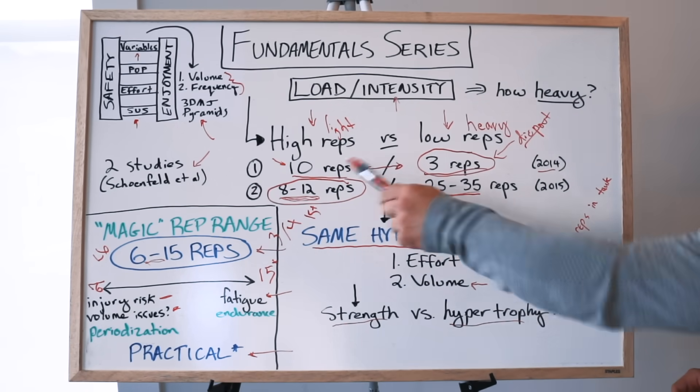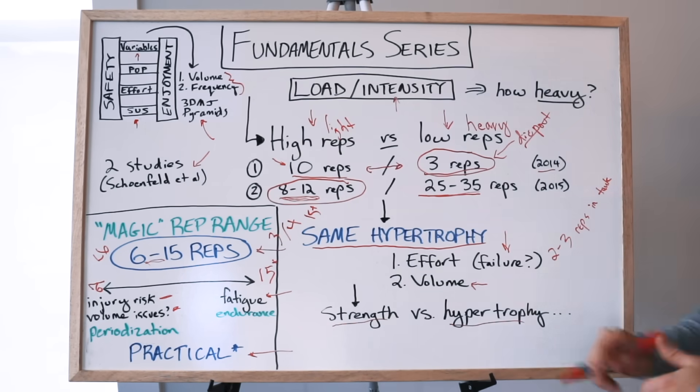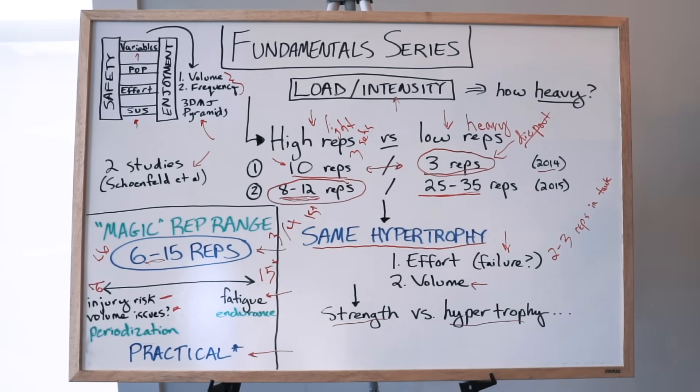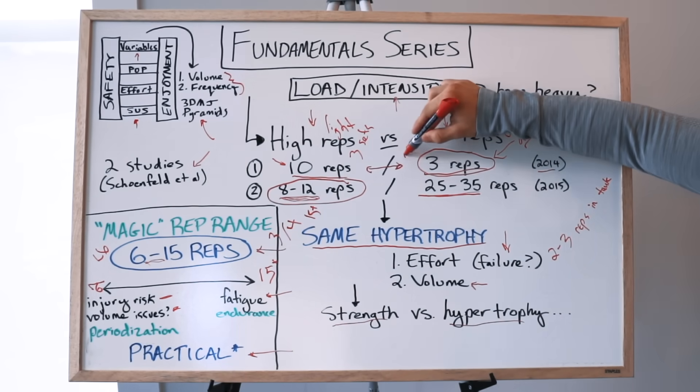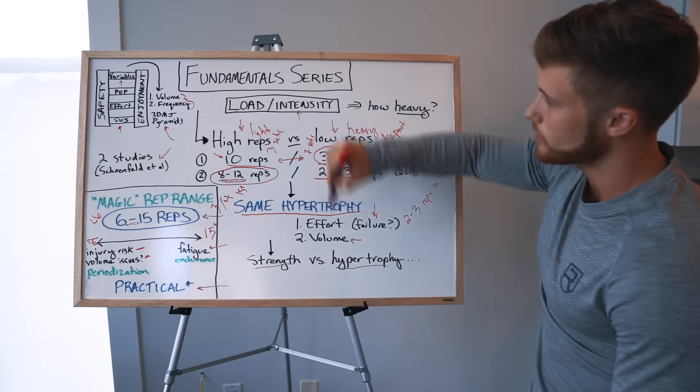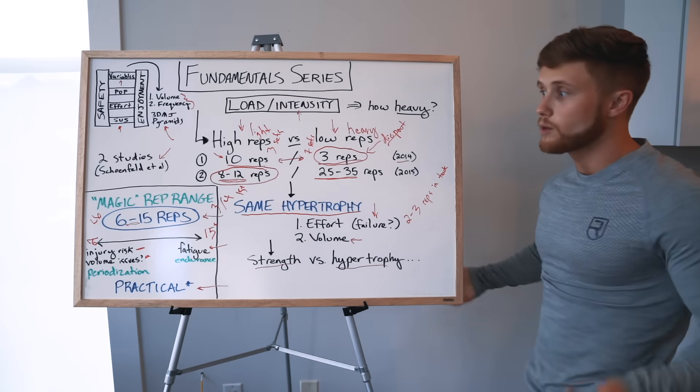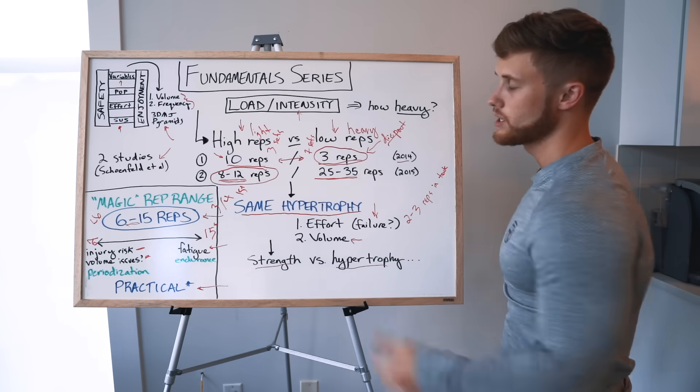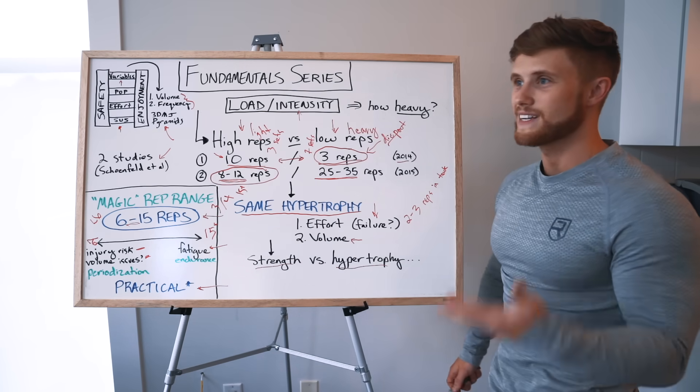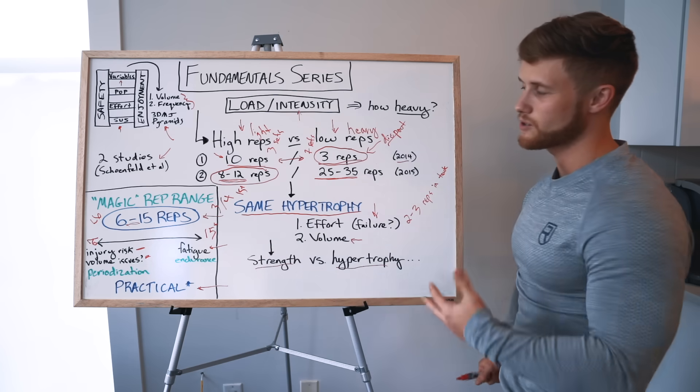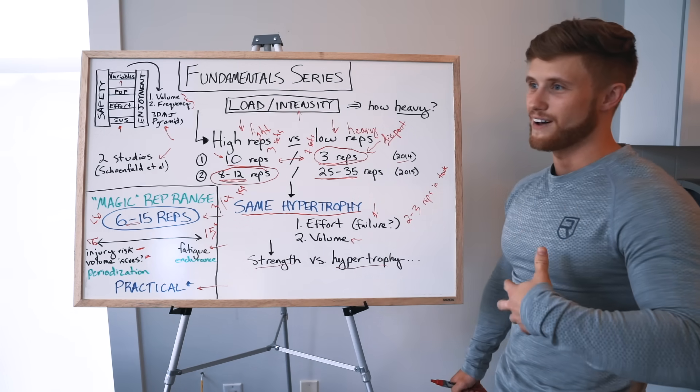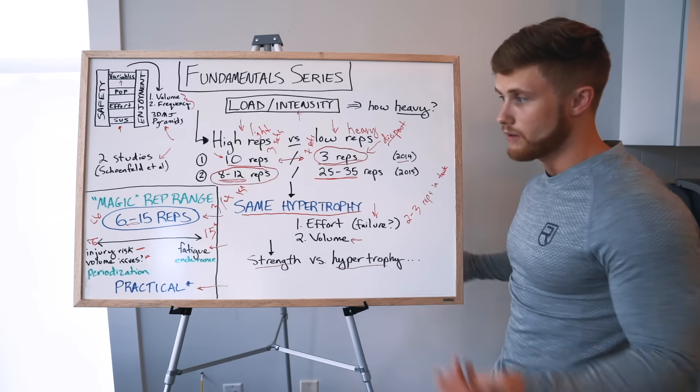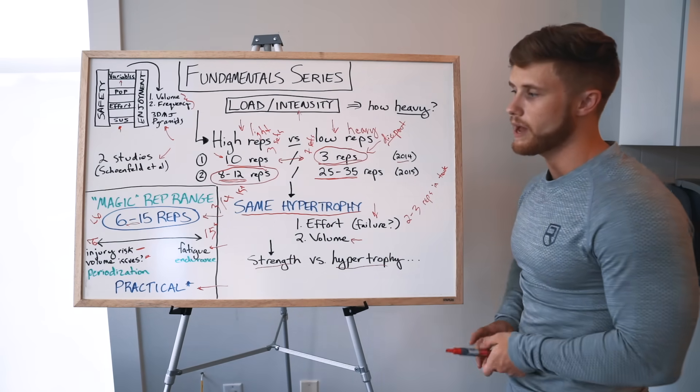You had people either getting injured or they just couldn't handle the training because it was just too heavy and their joints couldn't take it. If you can get similar hypertrophy with 3 reps and 10 reps, but you have a lower injury risk with the 10 reps, then the 10 reps is the more rational choice. Also, accumulating volume can be problematic in those heavier rep ranges. In order to match volume in this study, the people doing the 10 reps only had to do 3 sets, but the people doing 3 reps had to do 7 sets.